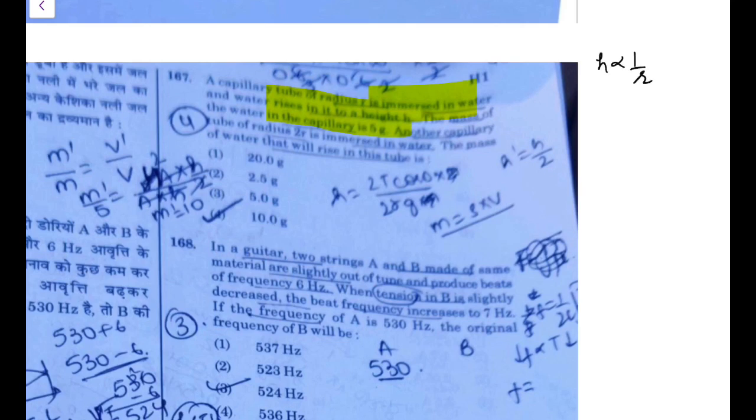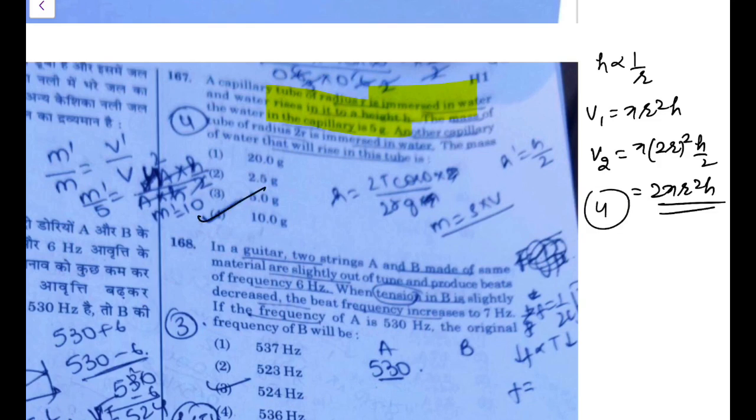Just remember h is inverse to the radius. When the radius is doubled, height will become half. In the first one, the volume is pi r squared h. In the second one, we will have radius is doubled but height is half. That becomes 2 pi r squared h, that is double the volume, double of the initial one. The mass would be doubled. It would be 10 grams. Option 4 will be the answer.